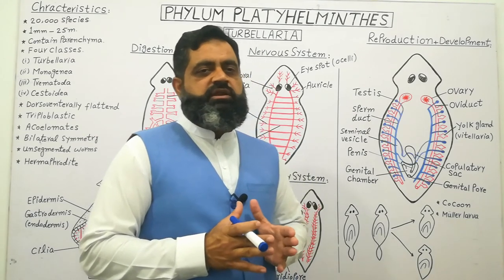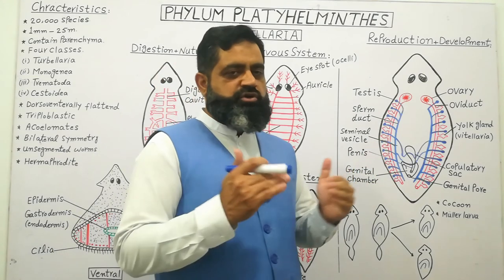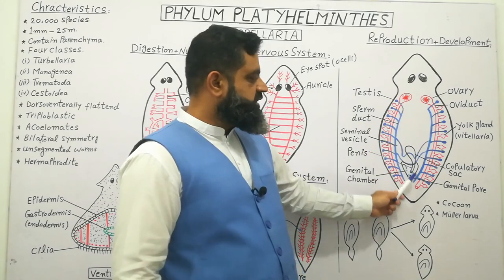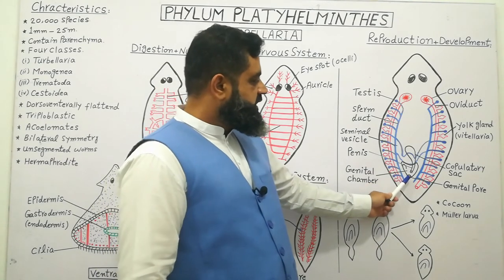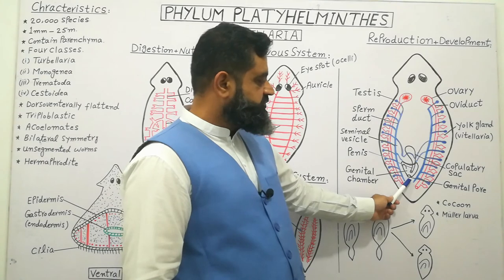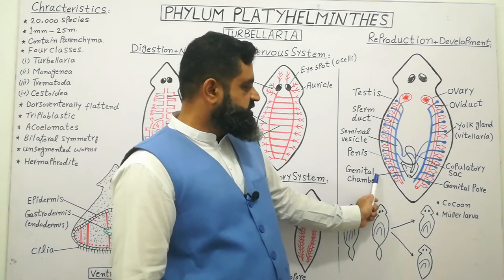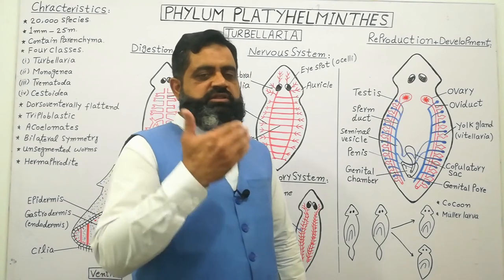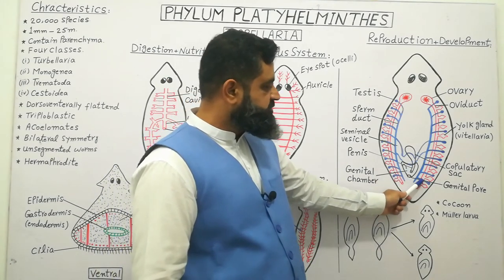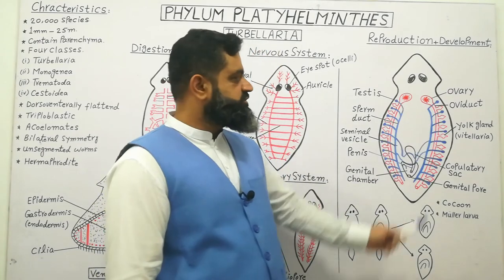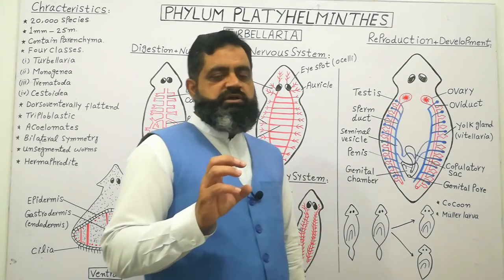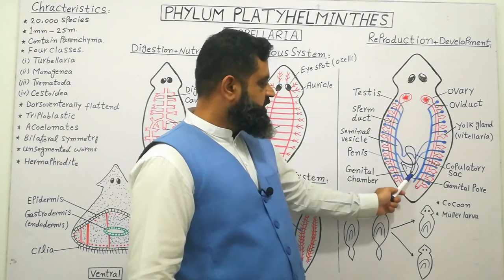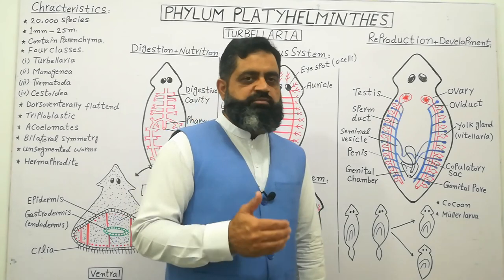Two planaria come together and insert their penis into each other simultaneously. The penis is inserted through a genital pore into the body. Sperms are stored in copulatory sacs from where they are transported into the oviduct, and the sperm reaches the ovary where it fertilizes the egg. After fertilization, the egg moves through the oviduct where yolk is stored inside it. These fertilized eggs are transported into the genital chamber and excreted through the genital pore to the outside.